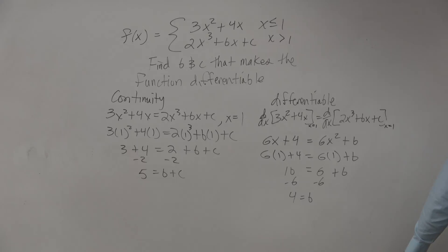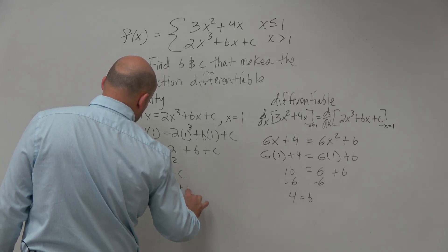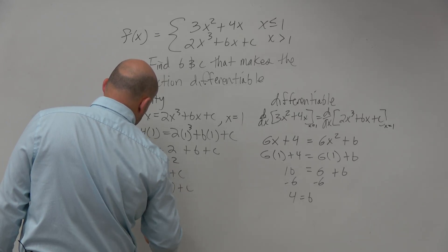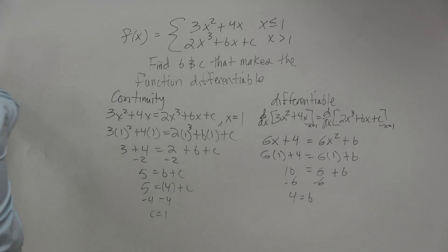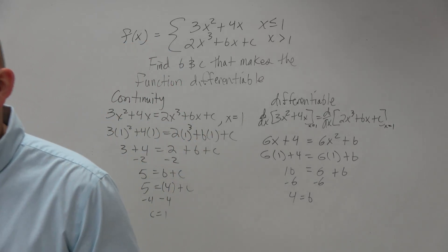So good. We got two answers with b, and then we can just plug that back in. So we have 5 equals 4 plus c, minus 4, c equals 1. Good job. All right.